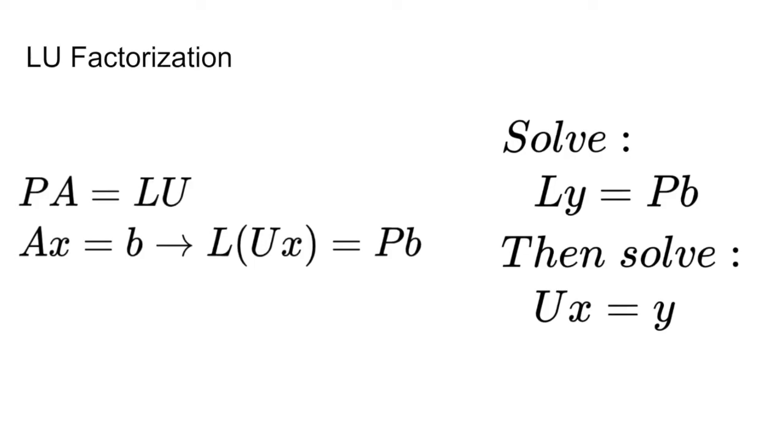Given this substitution, we can then solve two separate linear equations, Ly equals Pb, and then Ux equals y. Because L and U are triangular matrices, these new equations can be solved using forward and backward substitution, which is much easier.